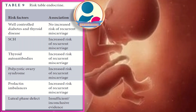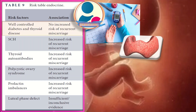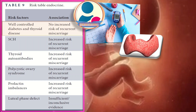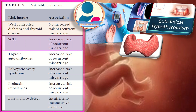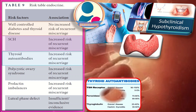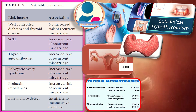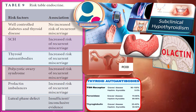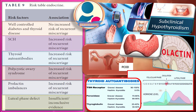Regarding endocrine factors: well-controlled diabetes and thyroid disease carry no increased risk of recurrent miscarriage. Subclinical hypothyroidism and thyroid autoantibodies are both associated with increased risk. Polycystic ovarian syndrome and prolactin imbalances also carry increased risk. For luteal phase defect, there is insufficient or inconclusive evidence regarding its association with recurrent miscarriages.